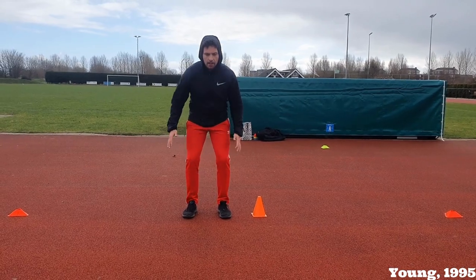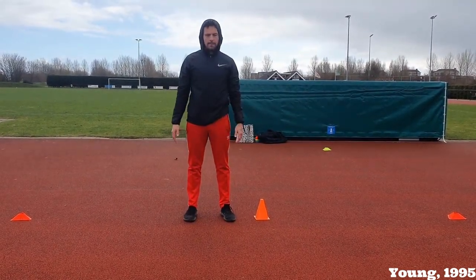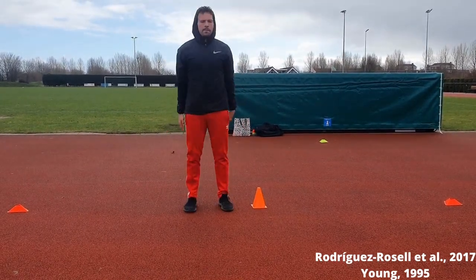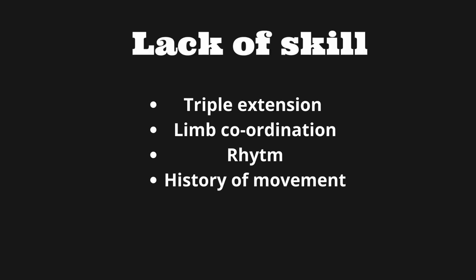We use the squat jump for leg power performance and the counter-movement jump for reactive strength of the lower limbs. He performs better in the counter-movement jump than the squat jump, which is expected, so there's no capacity issue there. Athlete 1's lack of skill may be attributed to his lack of triple extension during running, his limb coordination, his rhythm, and his history as a basketball player — specifically being used to back-stepping before taking off.